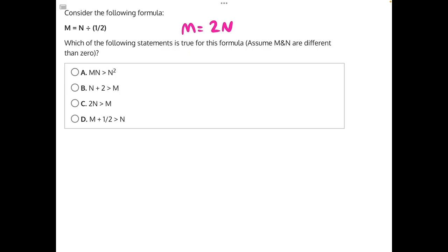Starting with answer choice A, we have M, or 2N, times N is greater than N squared. If we simplify this, N times N will give us N squared. We have 2N squared is greater than N squared.